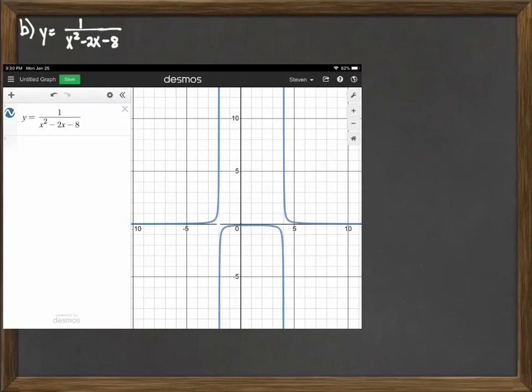As we look at the domain here, those values are going to be excluded. So we'll have an open circle there at negative 2. The graph will continue to positive 4 where we'll have another open circle, and then it will continue onward the rest of the way.